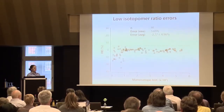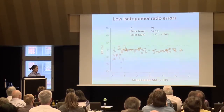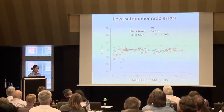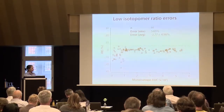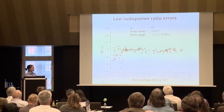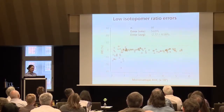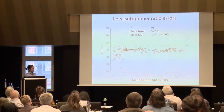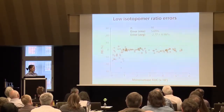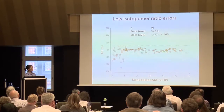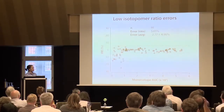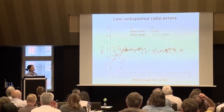Also important for many EPA-based methods are isotopomer ratio errors. Taking those 93 compounds and examining isotopic ratio errors, above a certain intensity threshold we are in general achieving errors of less than 3% on average.